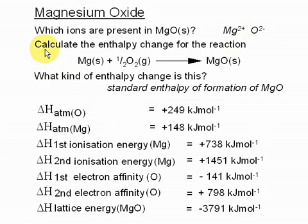So the question may ask, calculate the enthalpy change for the reaction: magnesium reacting with oxygen to give you magnesium oxide.